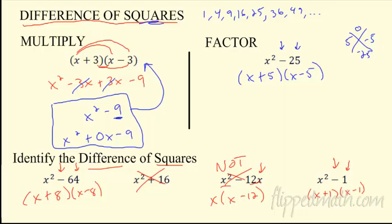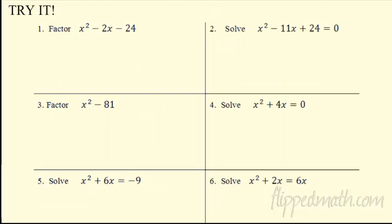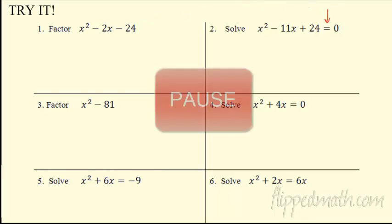That is it. Take these six problems. When it says factor, you're not solving — there's no equal sign. Just factor, un-multiply it. When you see an equal sign, I want x equals whatever it is. Try all of these — I'll put them up with the work shown. I mixed some old stuff in there just to keep it real. Good luck.